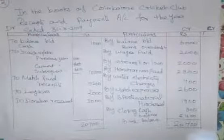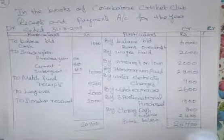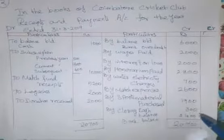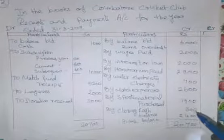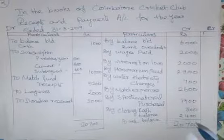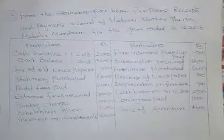Receipt side total is Rs. 20,700. Payment side total is Rs. 18,300. The remaining closing balance — cash balance already given. The balancing figure — bank balance — Rs. 3,400.